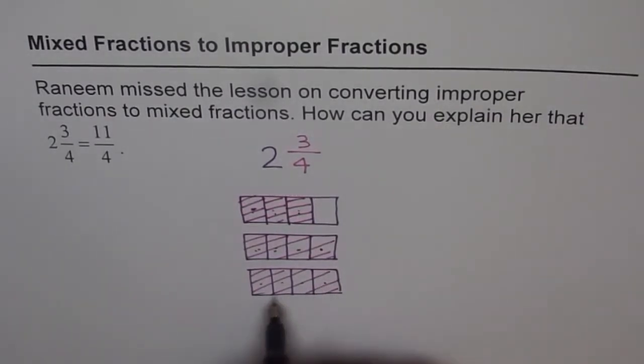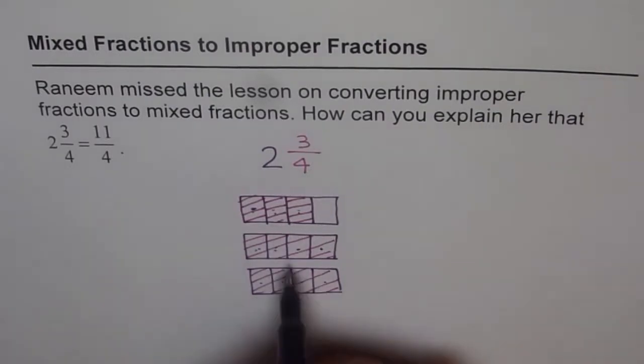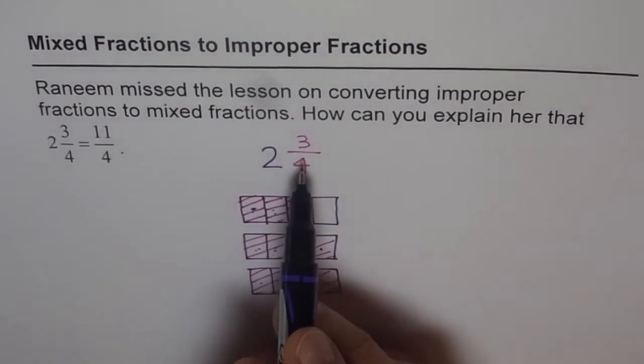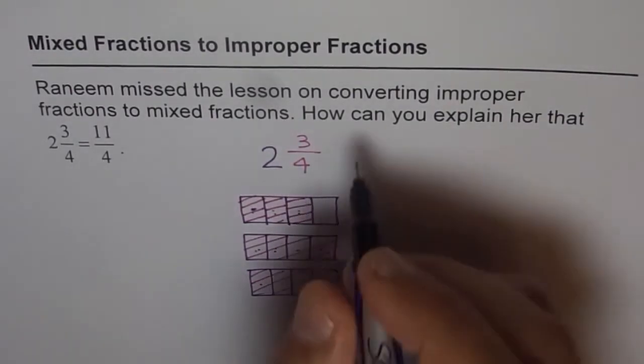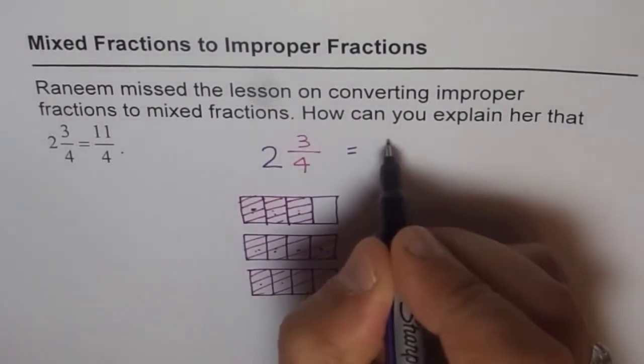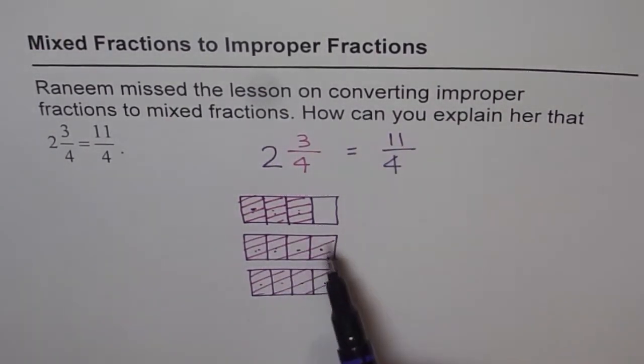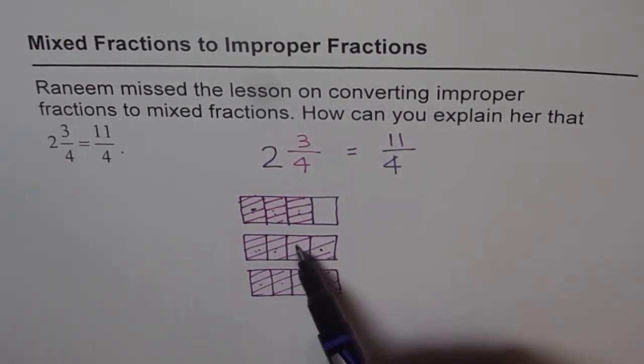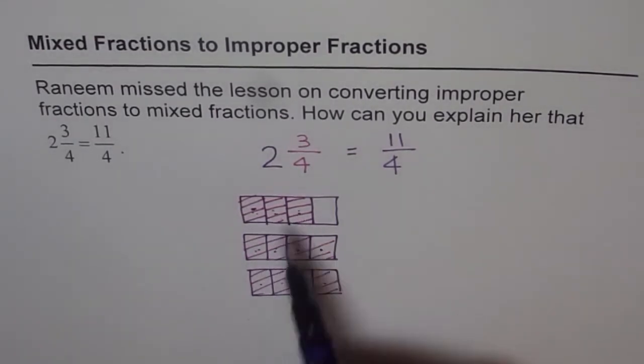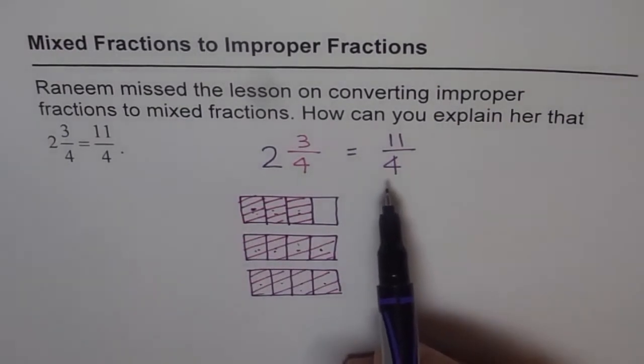So that means we have 11 fourths. And is it that 11 fourths equals 2 3/4? I think so. So let us write this as 11/4. It is exactly the same thing. Two wholes and 3 out of 4 is the same as 11 fourths.